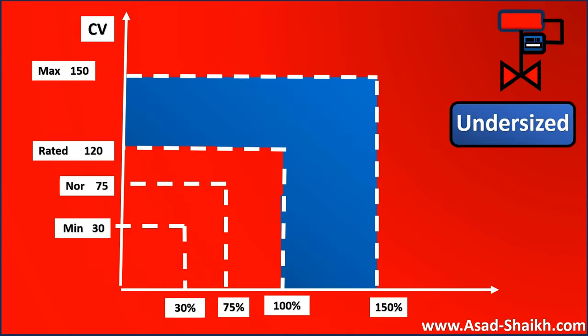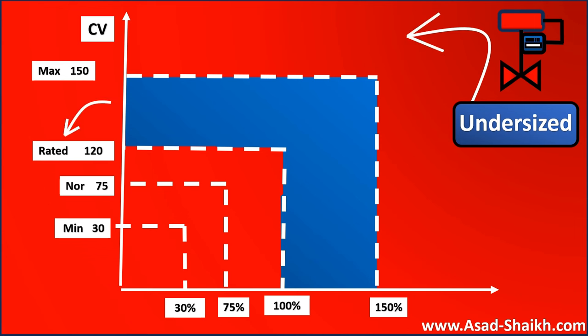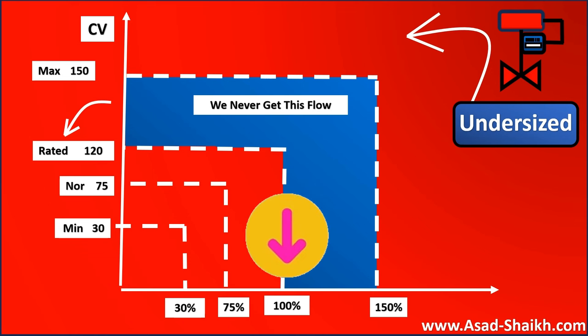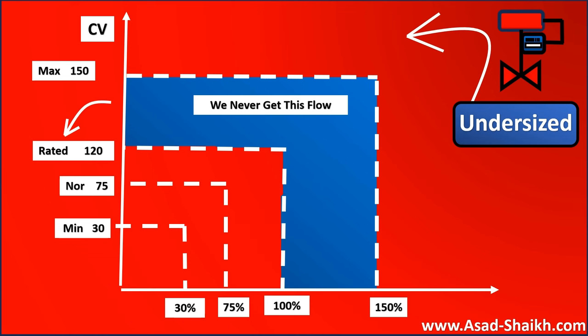Similarly, this is a classic example of an undersized control valve. Here the rated capacity is 120 but the required CV is 150. The control valve is already fully open at 100%, so it will never be able to provide the required flow rate at maximum flow conditions.